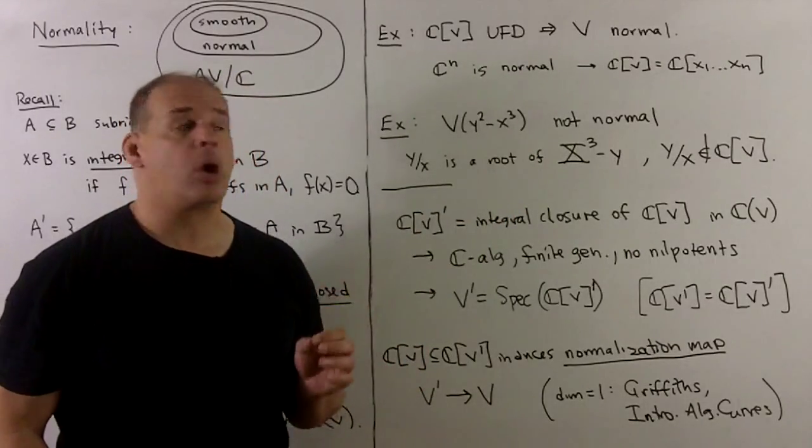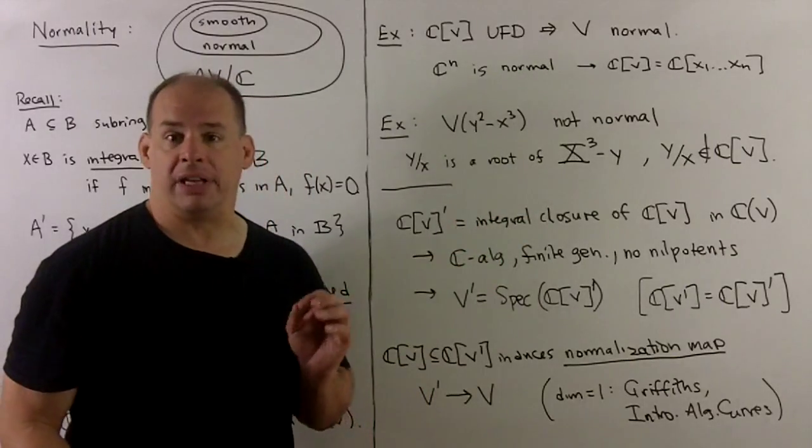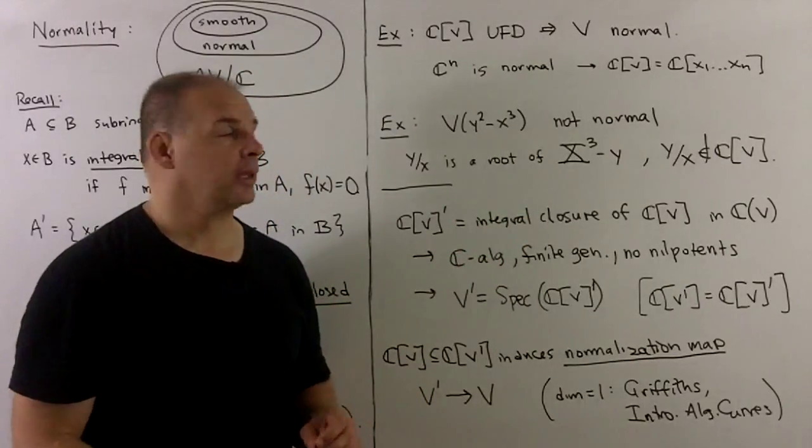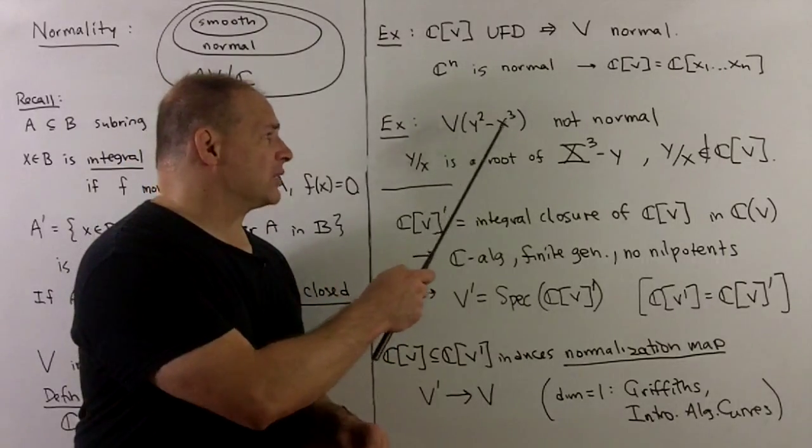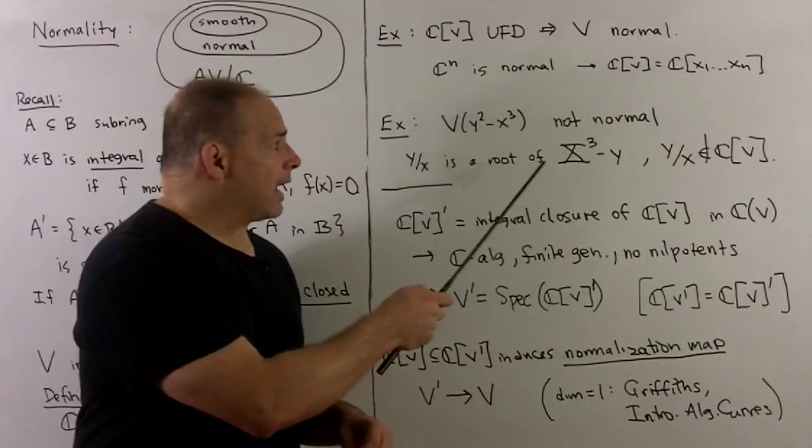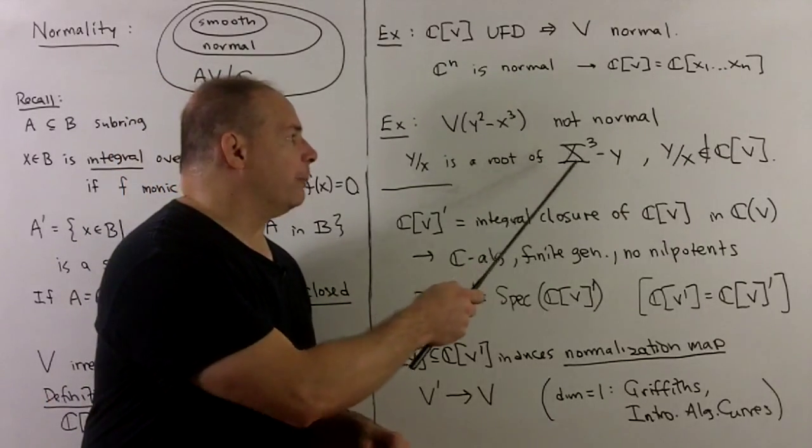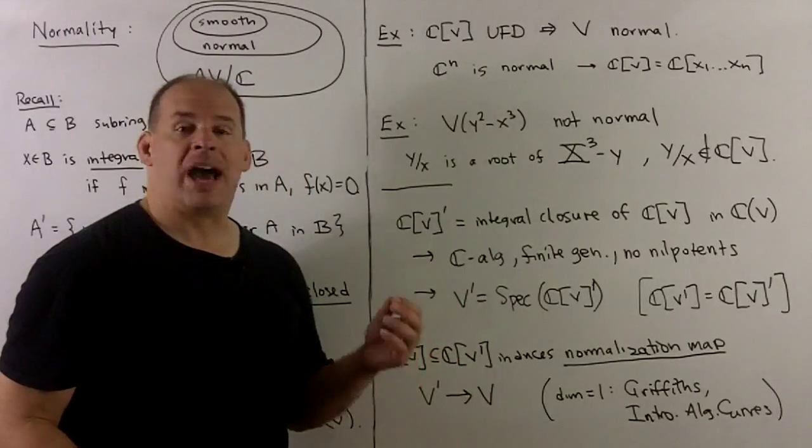For instance, C^n is normal—the coordinate ring is just polynomials in n variables, which is definitely a UFD. For an example that's not normal, we have our usual cubic: y² - x³ = 0. Here, y/x is the root of the monic polynomial X³ - y. But y/x is not in the coordinate ring, so not integrally closed.